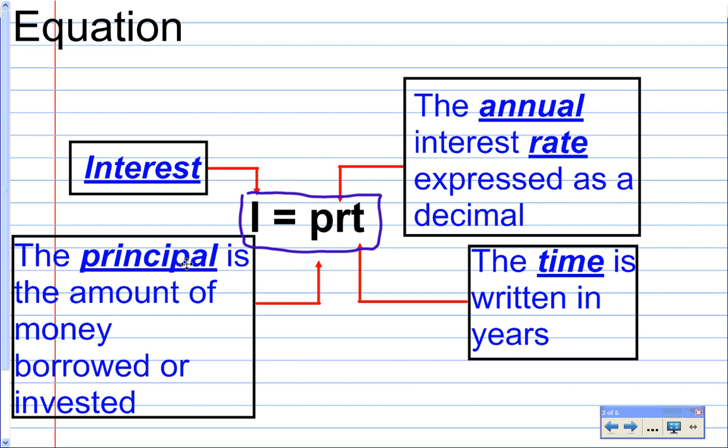The P stands for principal, which is the amount of money that's borrowed or invested. So the amount of money you borrow from the bank, or the amount of money you put in the bank. That's the P value. The R is the annual interest rate, and it's important that you notice that I have written here that it is expressed as a decimal.